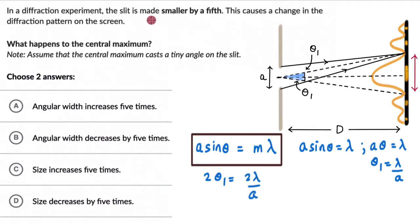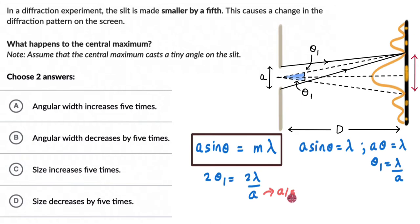Now we can see what happens when the slit is made smaller by a fifth. The original slit width is A, and the new A becomes A/5. Substituting into the angular width formula 2λ/A, the 5 goes to the numerator and the angular width becomes 10λ/A. So the angular width increases by 5 times.